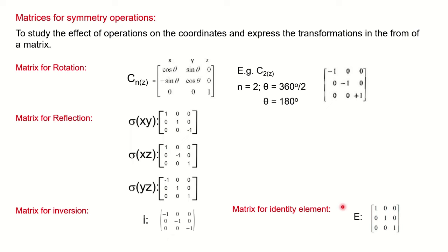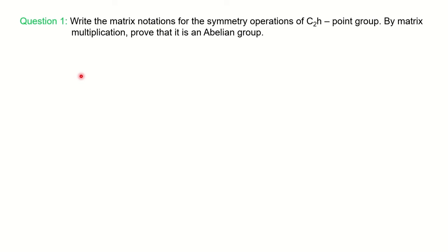So to summarize: for inversion, all diagonal values are −1; for identity, all diagonal values are +1. This covers the matrices for all symmetry operations, and now we are able to solve previous year MSc Chemistry questions on matrices. The question is: write the matrix representations for the symmetry operations of the C2H point group.